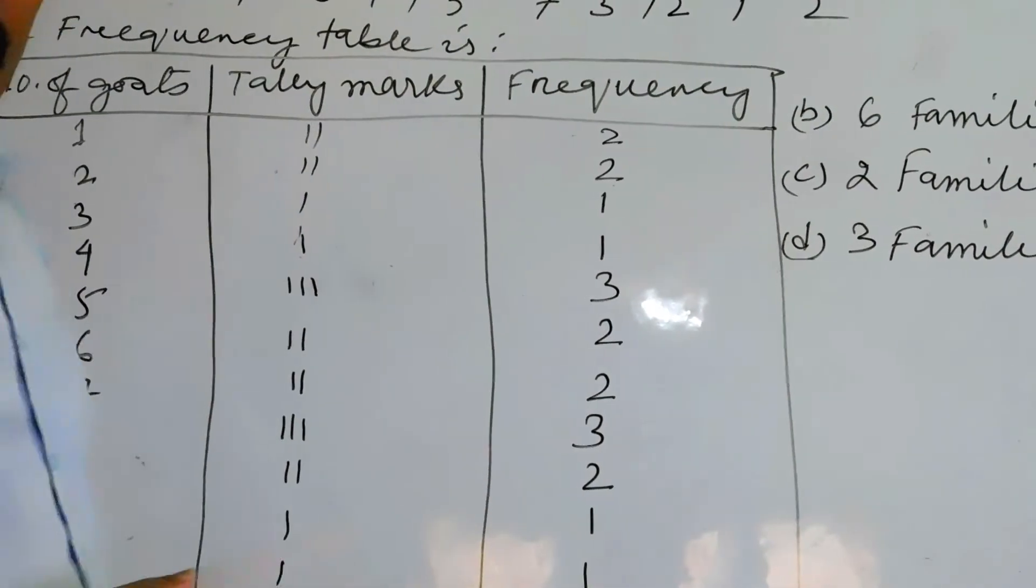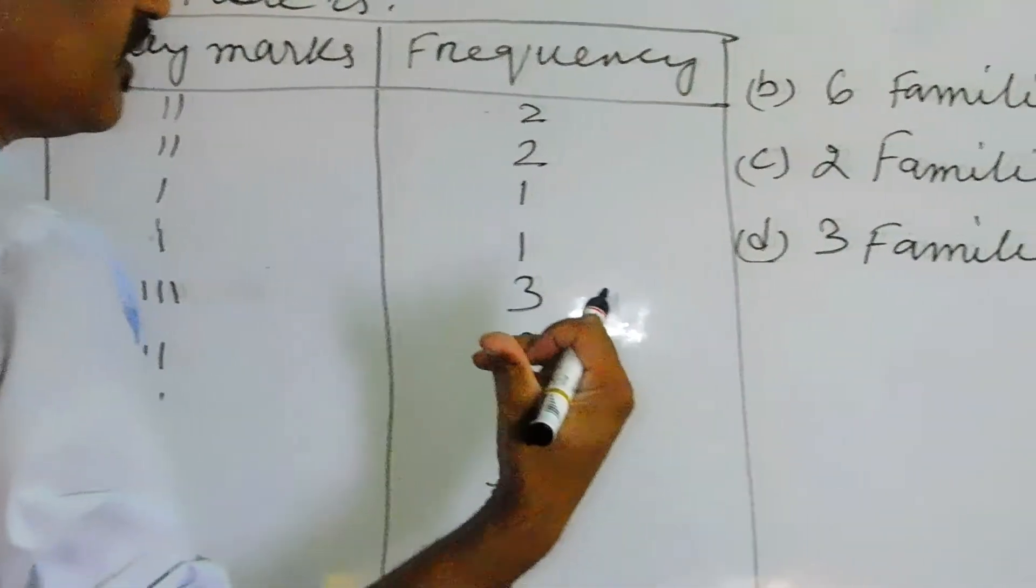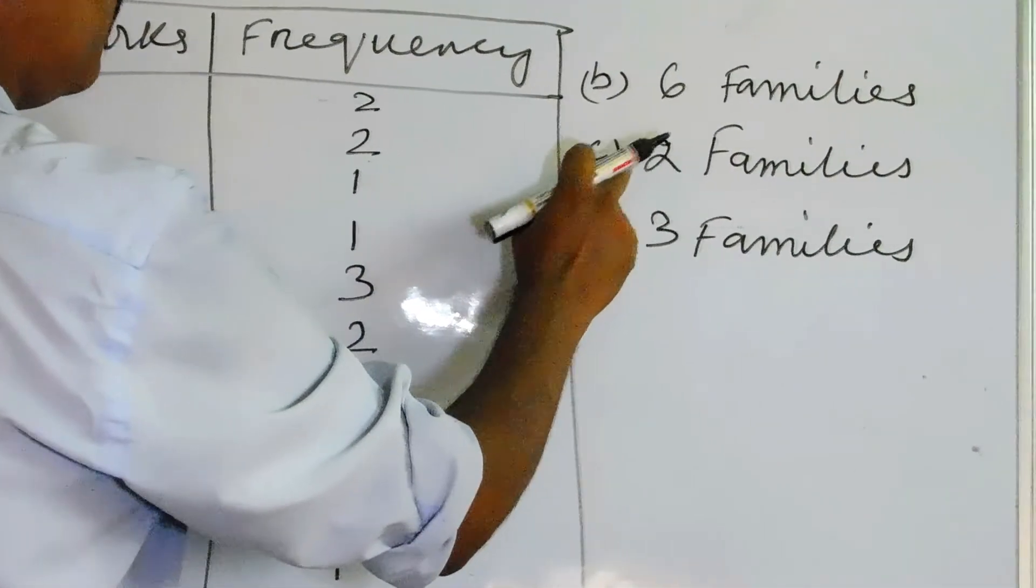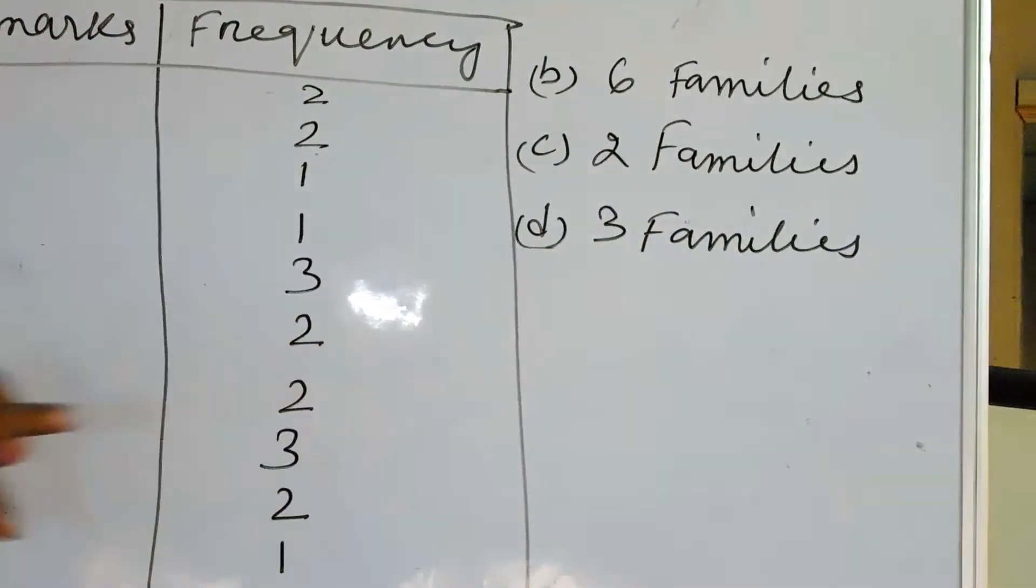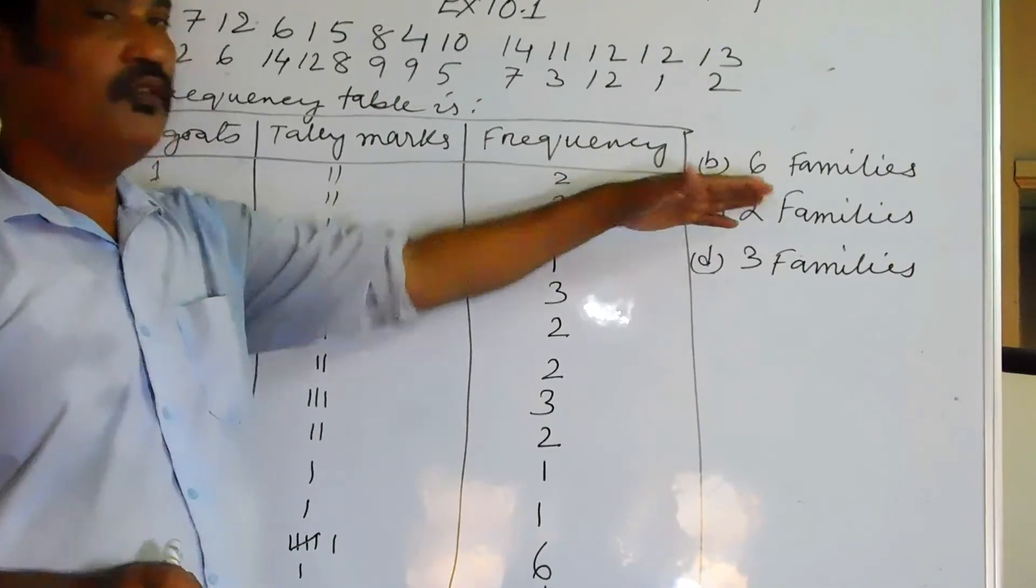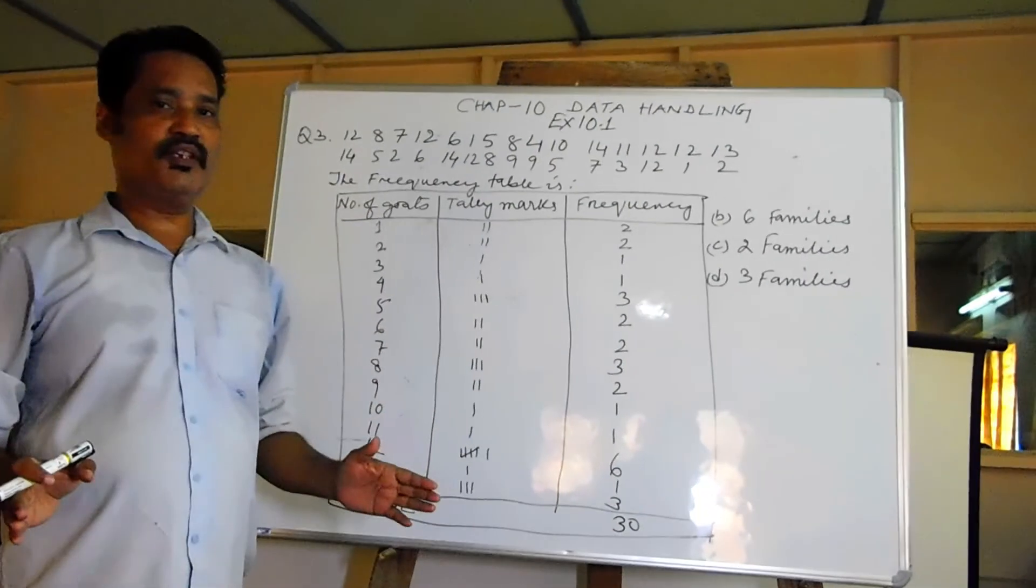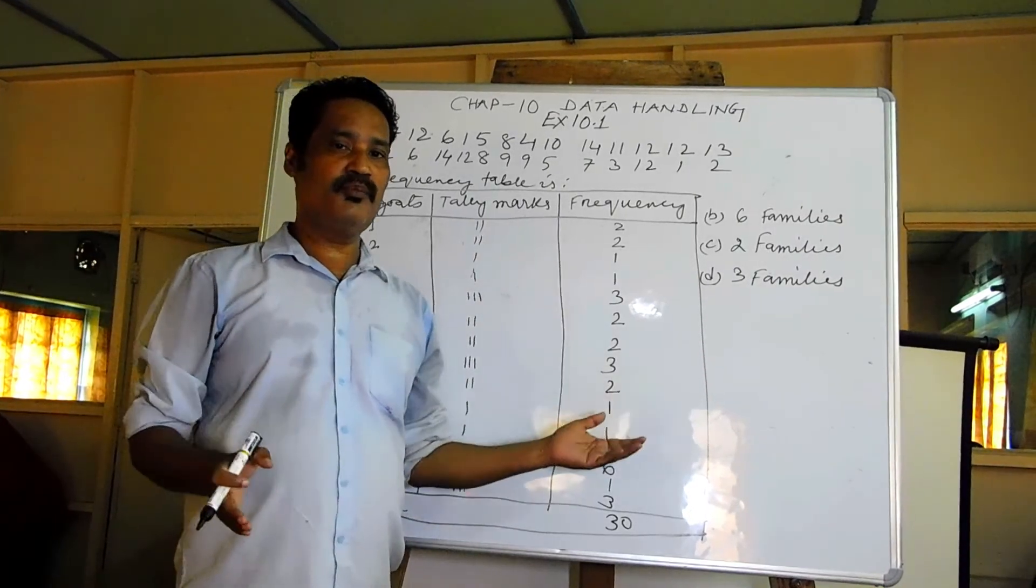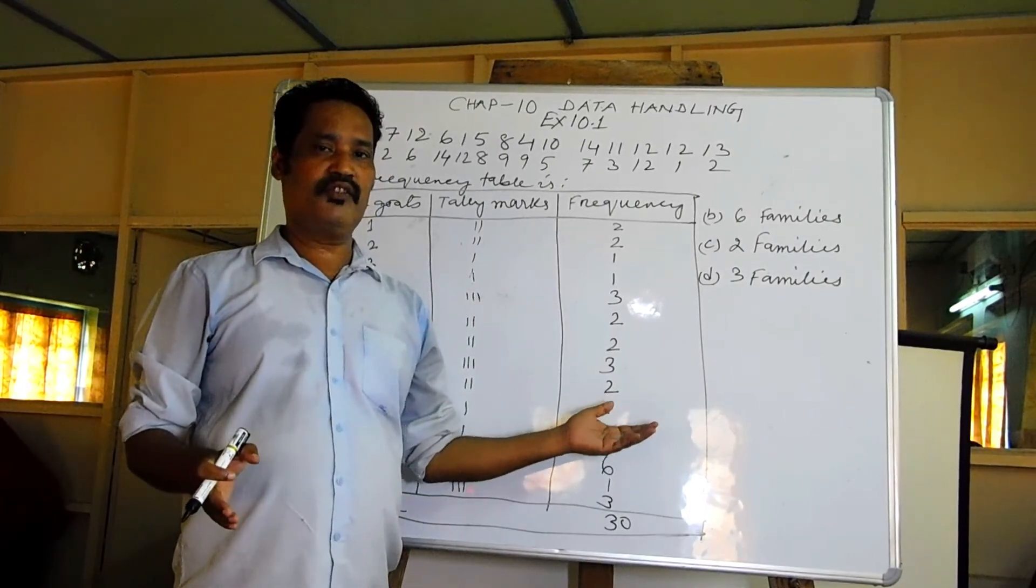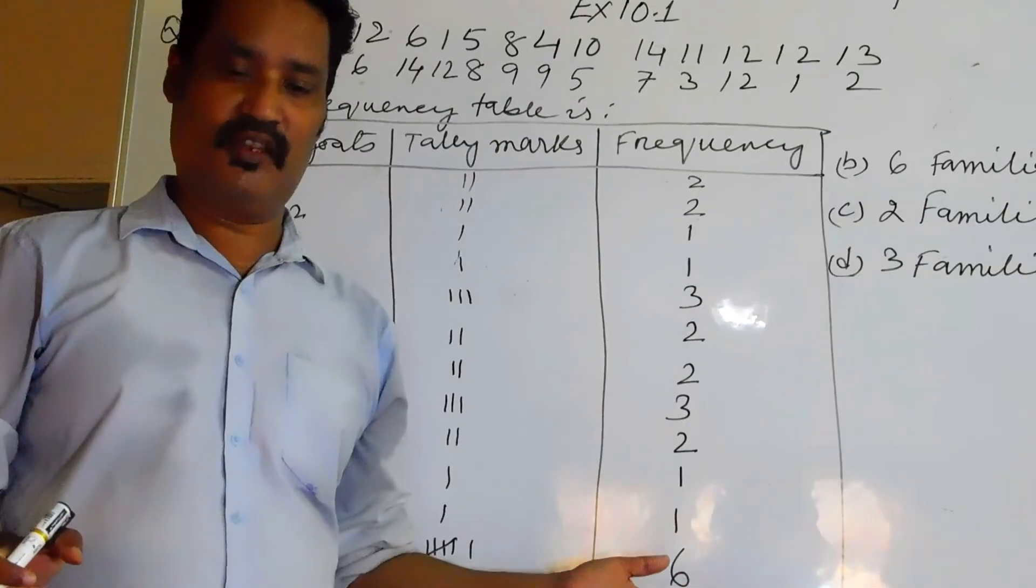Coming to question number b, six families, you see the question from the textbook and then you can note it down. So for today up to here 10.1 I have completed. Other questions you try to do it by yourself, otherwise we will send you the PDF file, the answers you can copy it down. So keep watching and be safe, thank you.